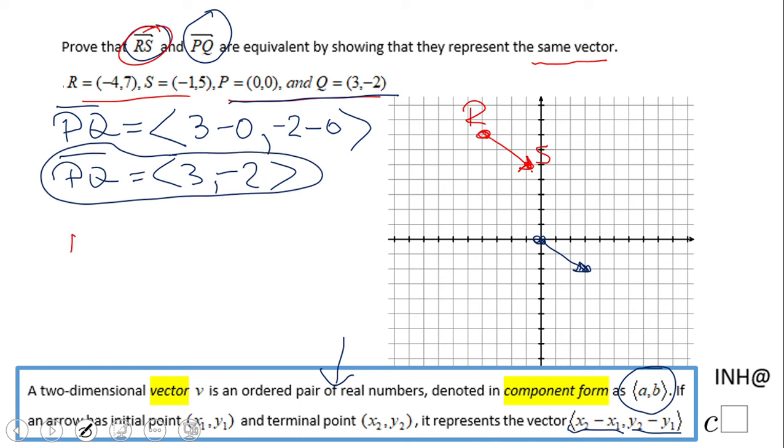Similarly, we're going to do the same for RS. The component form of RS, using the same format, will be (-1 minus -4) and (5 minus 7). Obviously, we're going to get (3, -2).